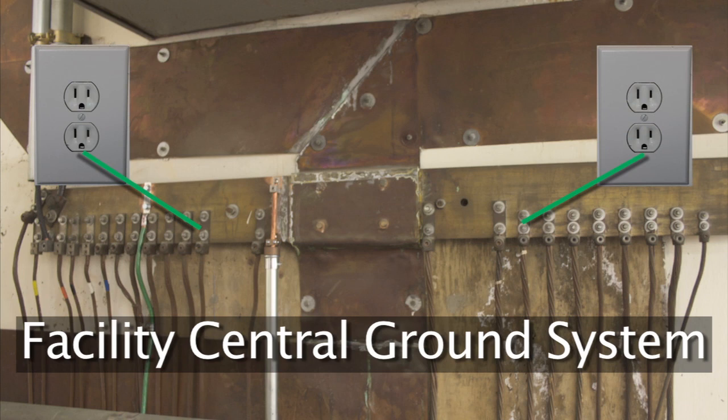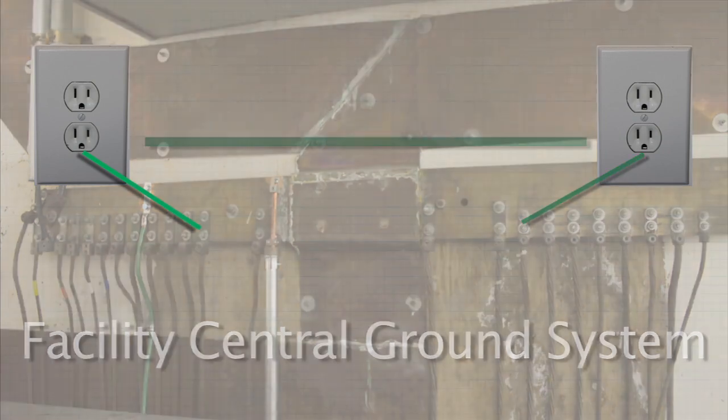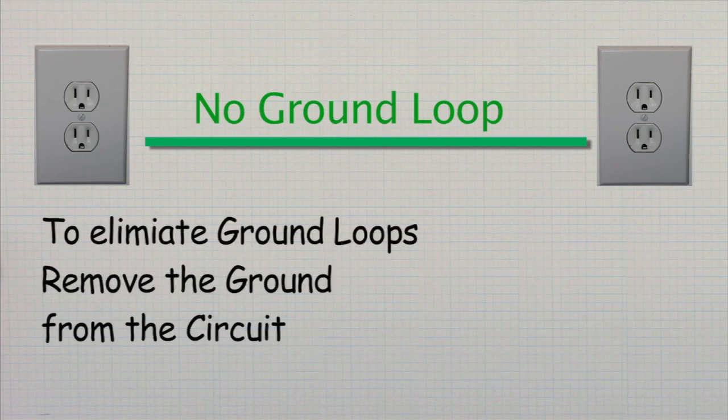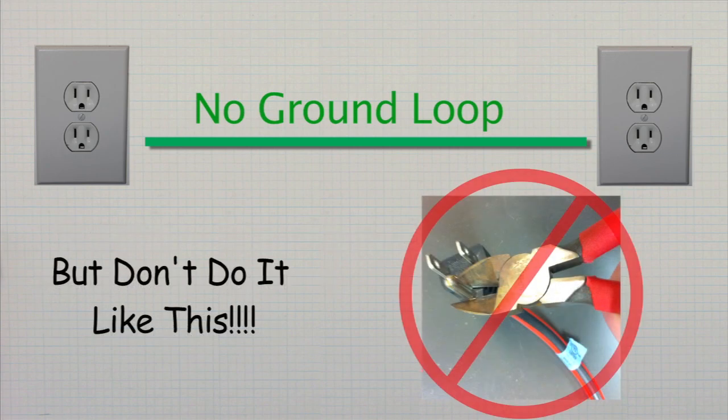But you don't always have control of the grounds connected to your system and you must deal with ground loops out in the field. In that case, you need to remove the ground. Just don't cut off the safety ground. There are better ways.